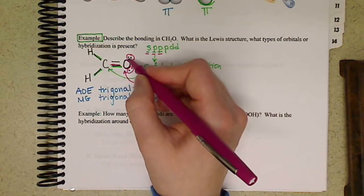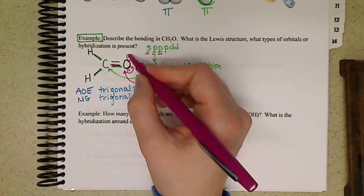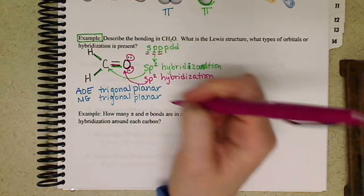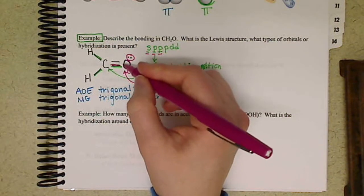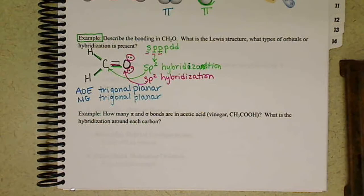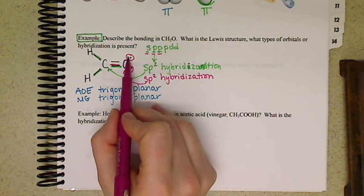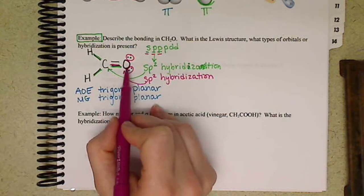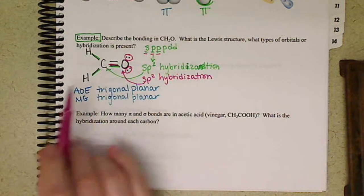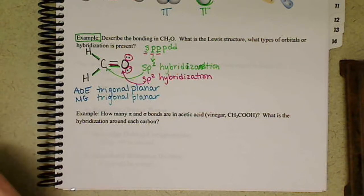That's why we put those two lone pairs kind of off to the sides, and that's because this oxygen has an arrangement of electrons of trigonal planar. So the electron pair here, electron pair, and that first bond, roughly 120 degrees.